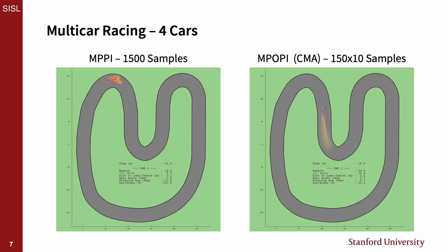For a five-car scenario, MPPI was only able to complete two laps in three out of 25 trials using 6,000 samples, while the CE and CMA versions of MPOPI were able to control up to six cars successfully with as few as 1,500 effective samples.